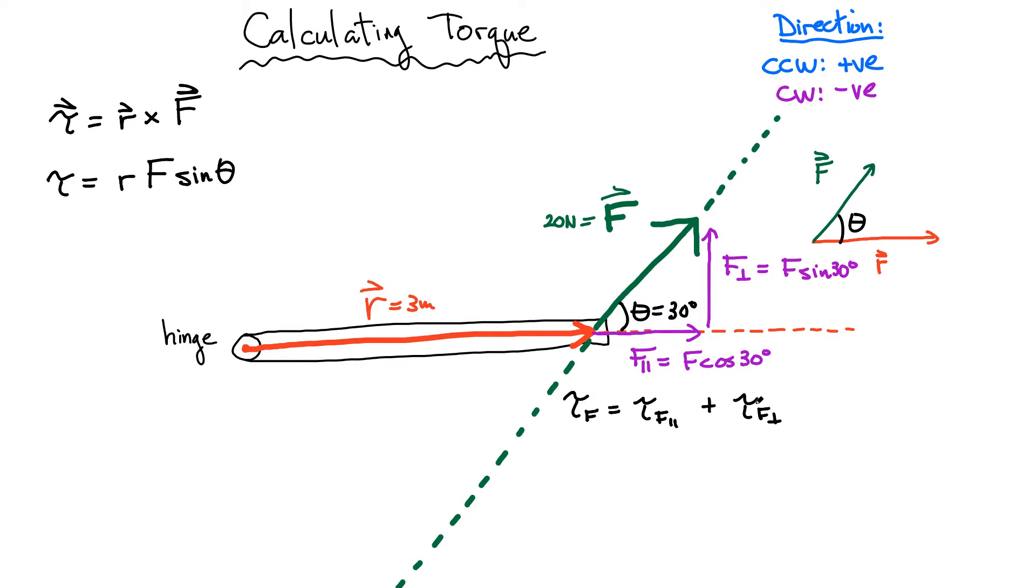Now we have two terms. And for each one of these terms, I can apply my equation for torque. So let's do the first one here. The torque due to the parallel component of the force is the distance to the pivot, it's 3, multiplied by the magnitude of the force, F cos of 30 degrees, multiplied by sine of the angle theta. What is the angle theta now between the vector R and this component of the vector F? You've got to be a little bit careful, but here it's sine of 0 degrees, which gives me 0.